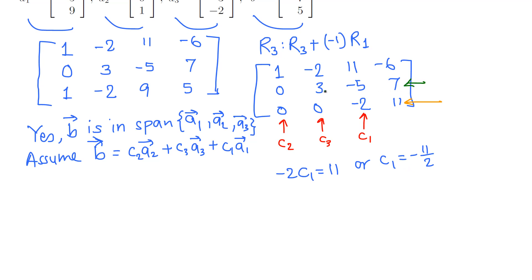Then go to second row. From this we get 3*c3 - 5*c1 = 7. c1 is -11/2, so that is 3*c3 - c1 is minus, so it will plus 5 times 11/2, which is 55/2, equals 7. Subtract 55/2 and divide by 3. That comes out to be -41/6.